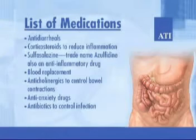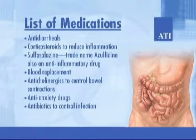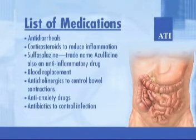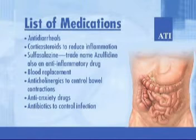IBD is treated with medications, rest, diet, adequate fluids, stress control, and surgery. Important medications used to treat both Crohn's disease and ulcerative colitis include: anti-diarrheals; corticosteroids to reduce inflammation; sulfasalazine (trade name Azulfidine), also an anti-inflammatory drug; blood replacement; anticholinergics to control bowel contractions; anti-anxiety drugs; and antibiotics to control infection. Clients who are very ill with IBD should receive IV fluids and possibly total parenteral nutrition (TPN) to allow the bowel to rest and to improve nutritional status.